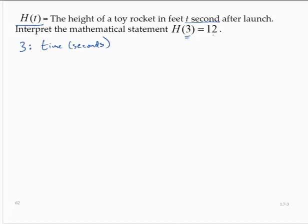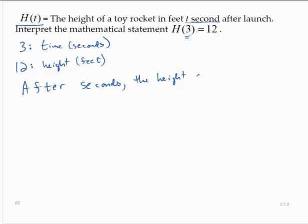12 is equivalent to h of t, h of 3. So 12 is the height in feet. Putting that together in a sentence: after 3 seconds, the height of the toy rocket is 12 feet.